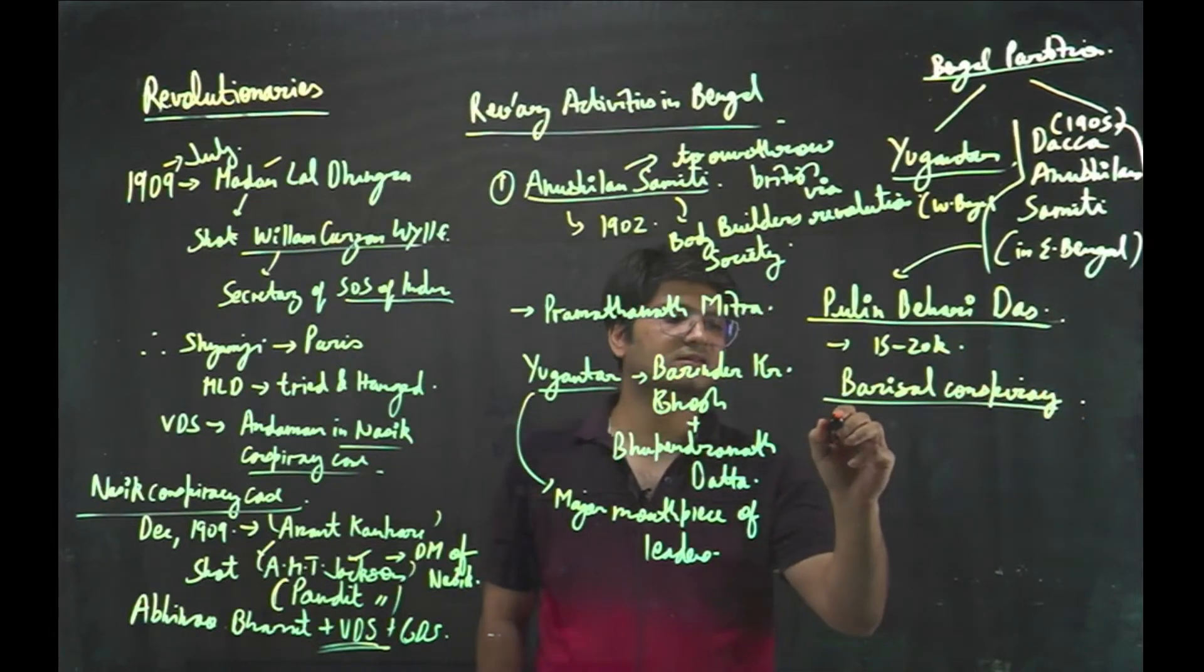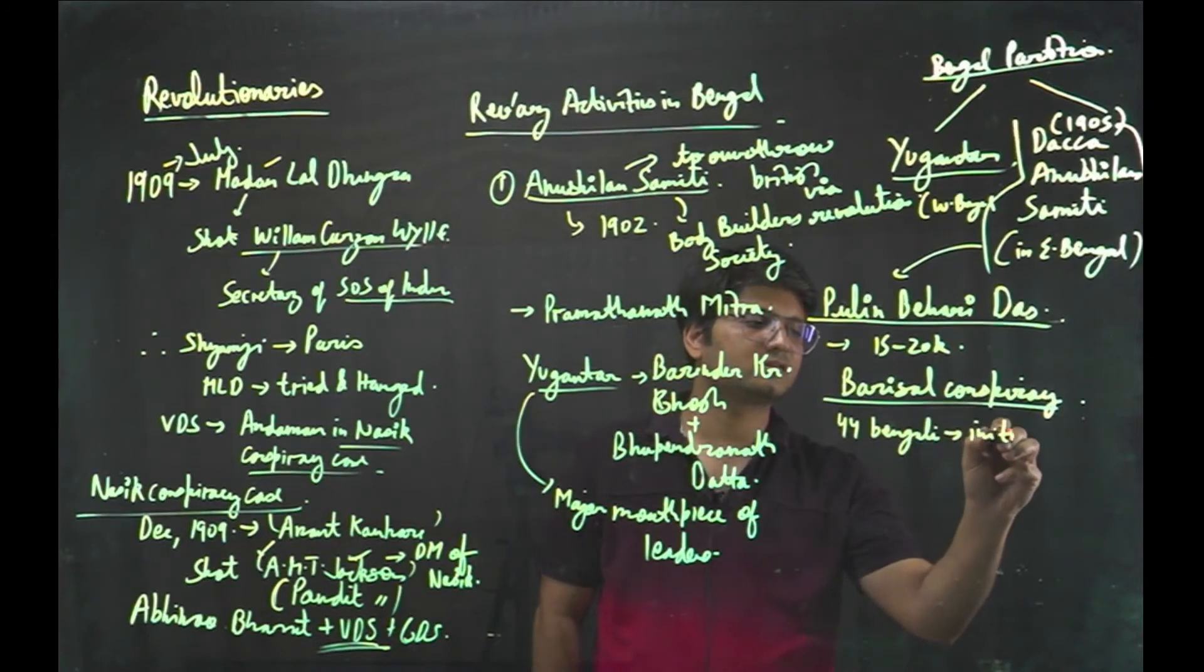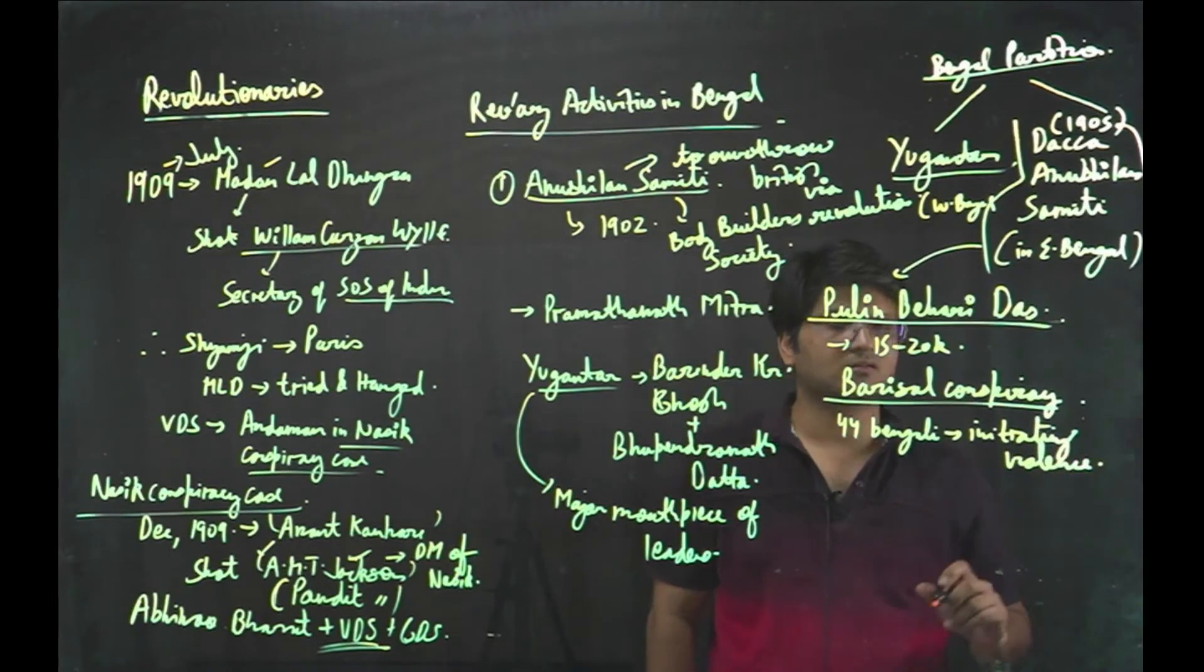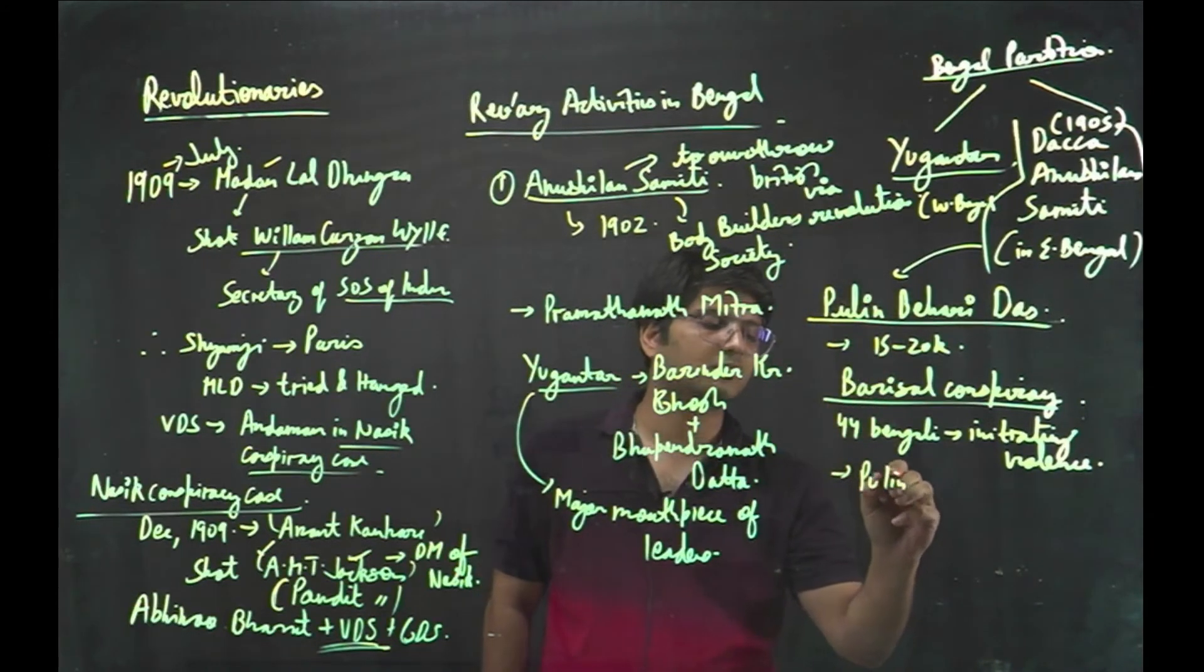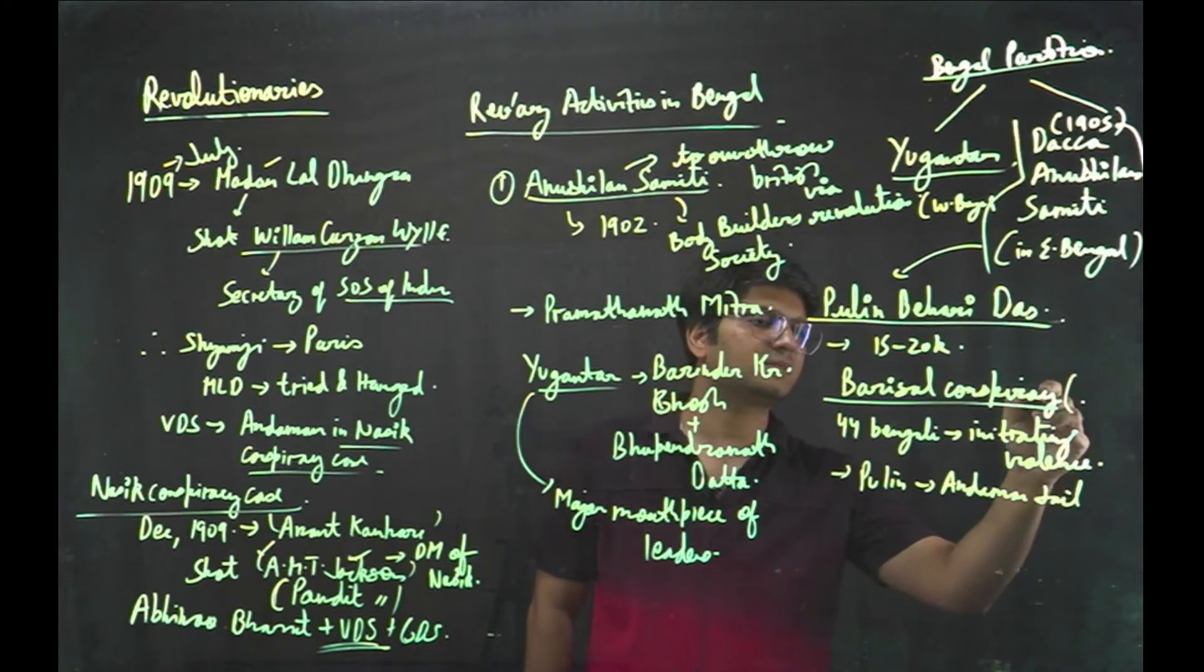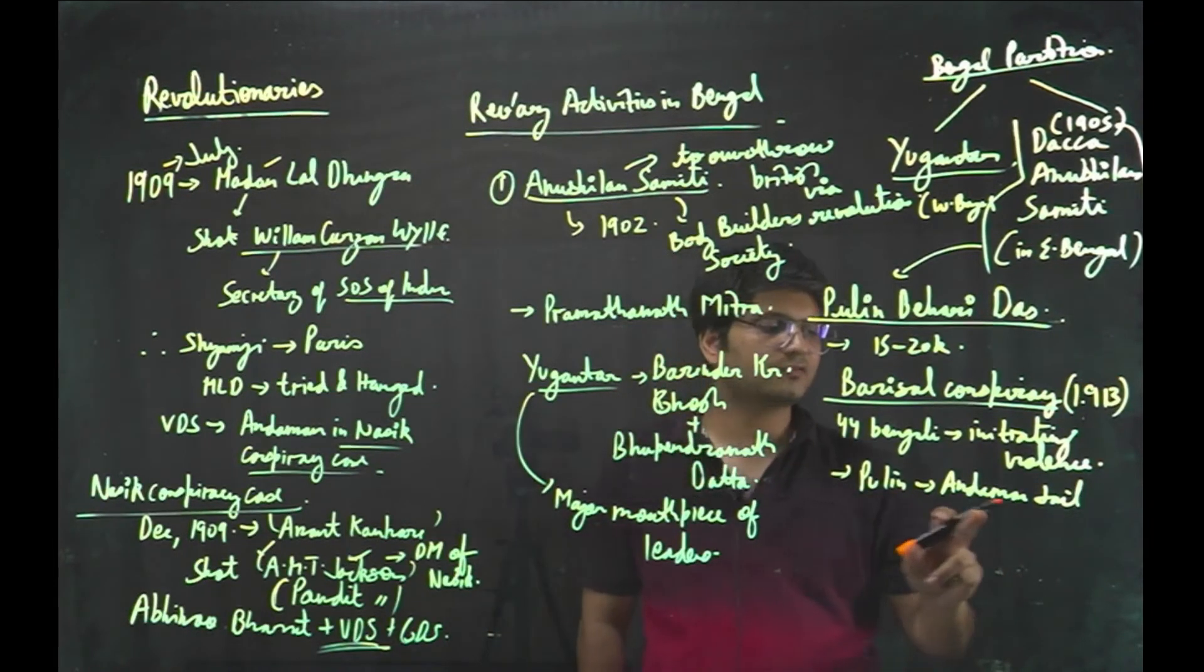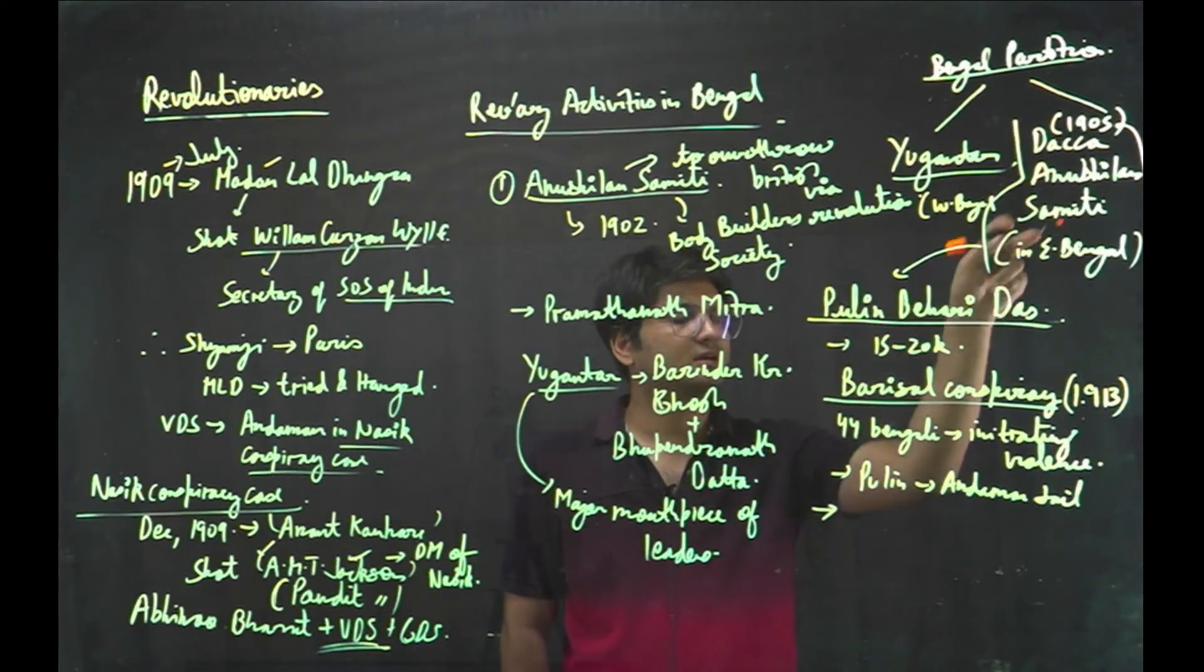There was Barisal Conspiracy. In Barisal Conspiracy, 44 Bengalis were accused of initiating violence. So, investigations and as a result, Pullin Bihari Das. Pullin was sent to Andaman jail. This is an incident, Barisal Conspiracy is an incident of Pullin was sent to Andaman jail. And this Dhakka Anushilan Samiti was banned.